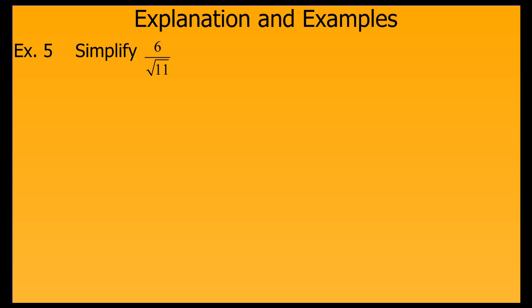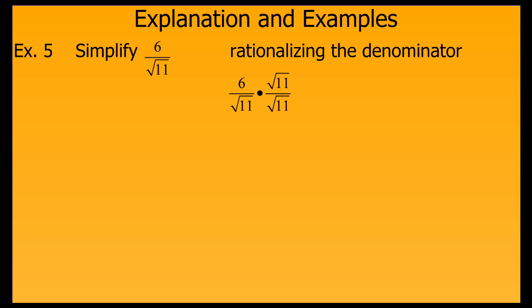This example is a little different. It has a radical in the denominator, so we know it's not simplified, yet we can't really do much with the square root of 11. So we go through a process known as rationalizing the denominator. We choose to multiply our fraction by the square root of 11 over the square root of 11, because that's the same thing as 1, and multiplying by 1 doesn't change the value of our expression. When we do that, we get 6 root 11 in the numerator, but simply 11 in the denominator, since the square root of 11 times the square root of 11 gives us 11 by definition. This is now simplified form.